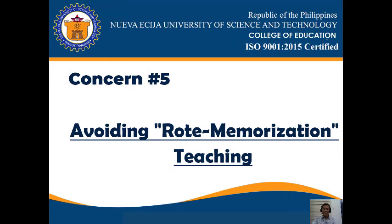Concern number five: avoiding rote memorization teaching. Because much of social studies revolves around names, places, and dates, it is very easy to create assignments and tests that do not move beyond rote memorization, and do not force students to engage in the kind of advanced critical thinking skills needed for true learning.